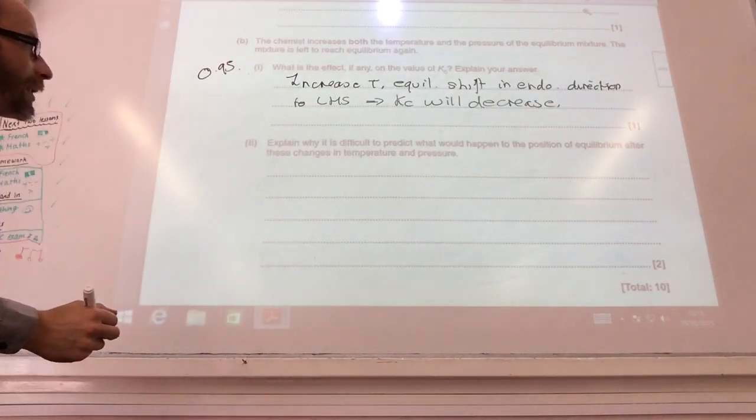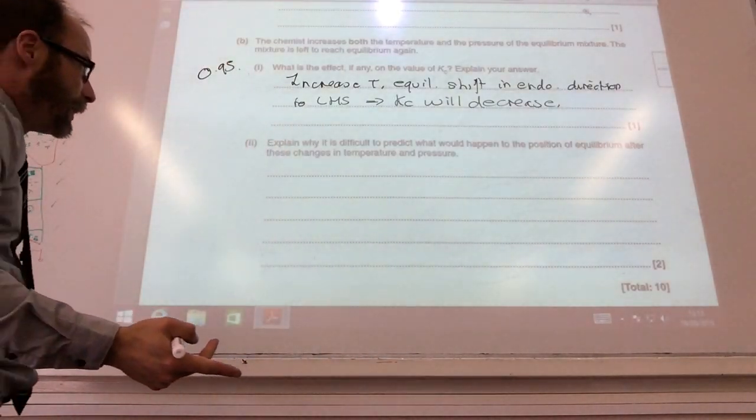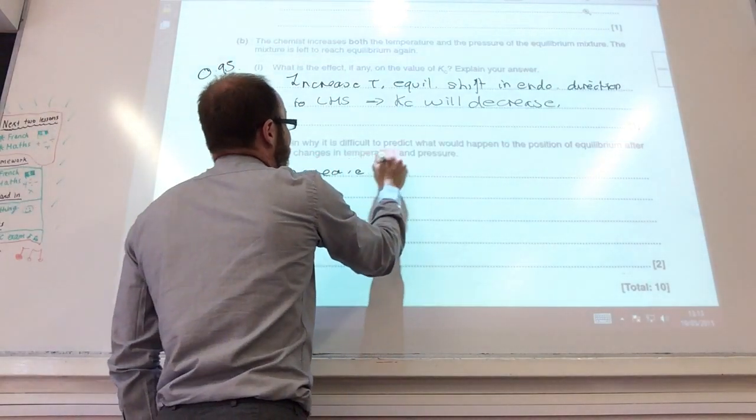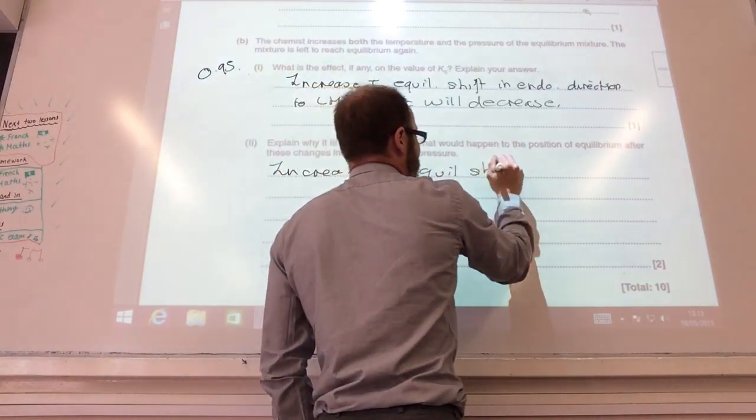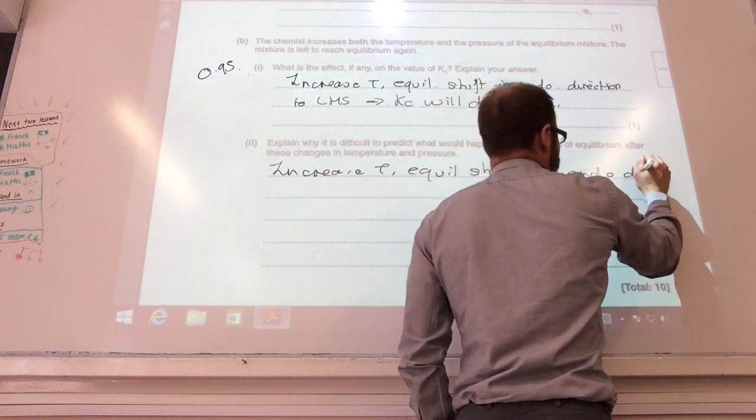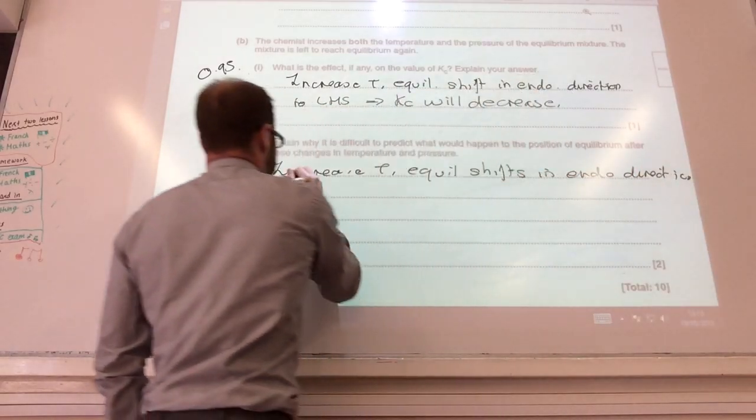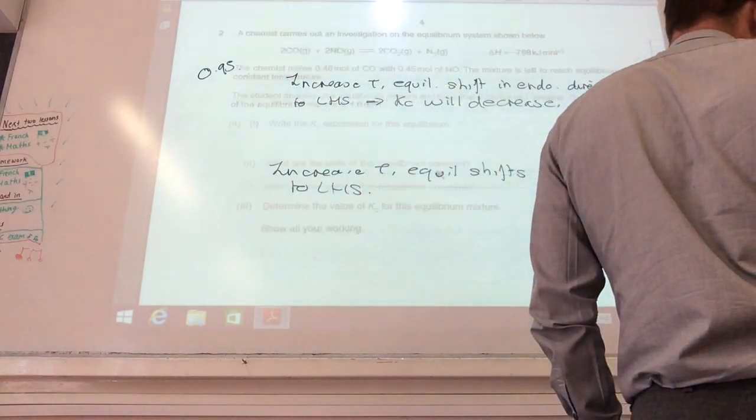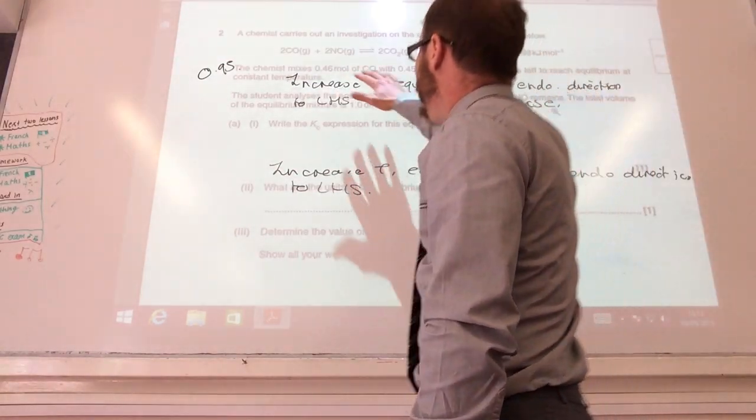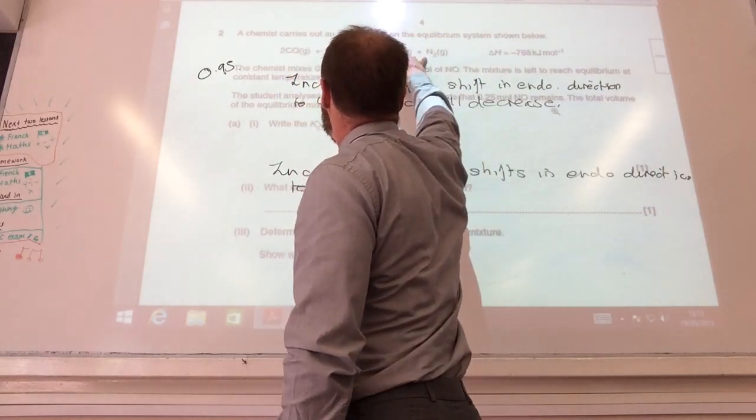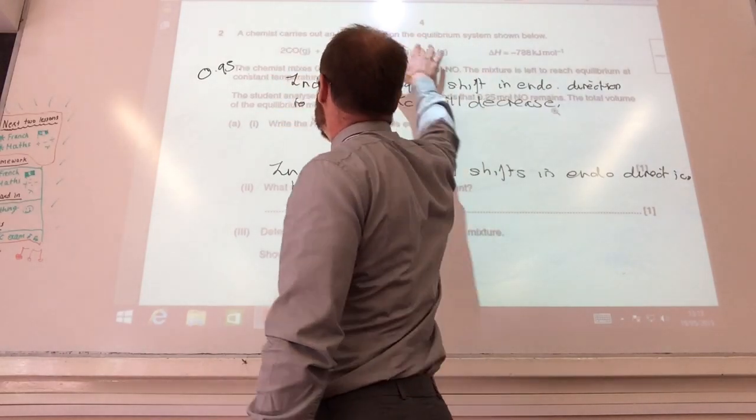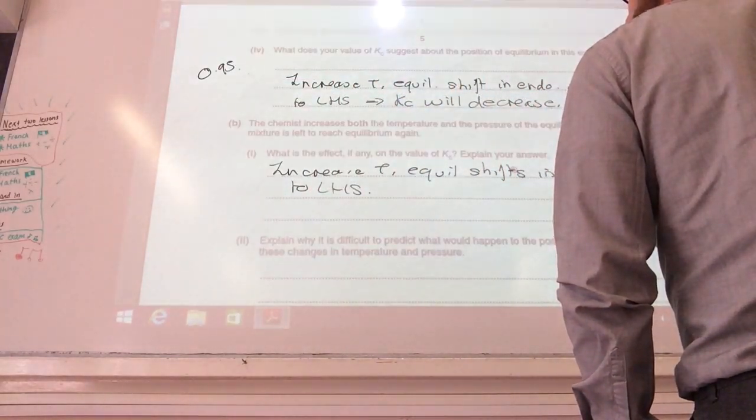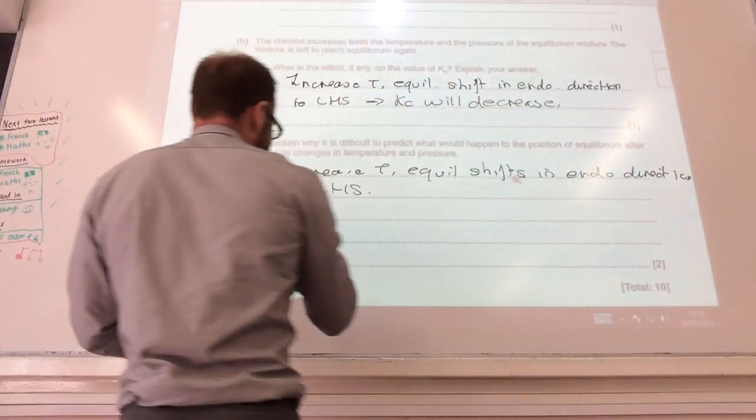Why is it difficult to predict what happens to the position of equilibrium when we increase both the temperature and the pressure? Well as I've just said, increase in temperature, equilibrium shifts in endothermic direction which is to the left hand side. But let's just go back to the old equation. You'll remember back from Le Chatelier's principle I have got four moles of gas here and only three moles of gas there. So if I increase the pressure I'm going to shift to the side with fewer moles of gas. So increase the pressure, the equilibrium shifts to the right hand side because there are fewer moles of gas on the right hand side.